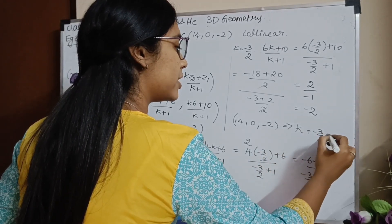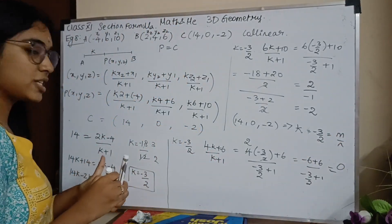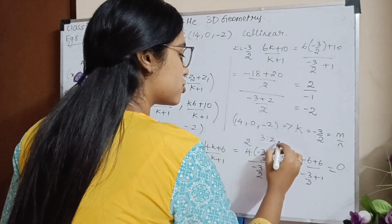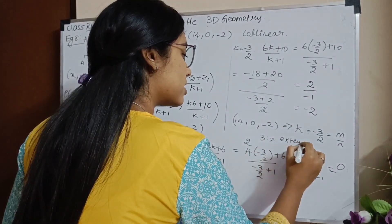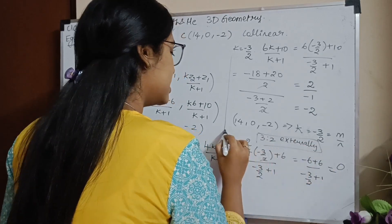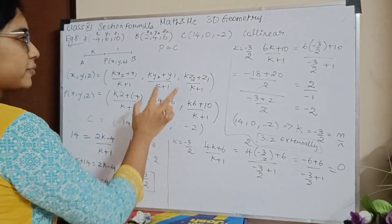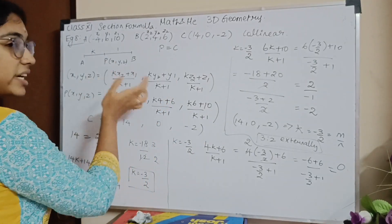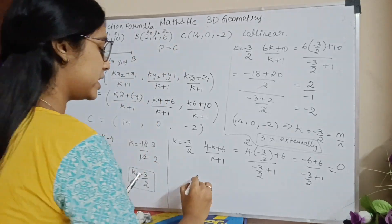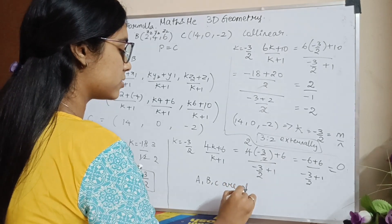So my K value is minus 3 by 2, which is M divided by N. So M is to N is 3 is to 2, and it divides externally because of the negative sign. The ratio is 3 is to 2 and it divides externally. So I have proved that point P coincides with point C, and therefore A, B, C are collinear. That is my final answer.